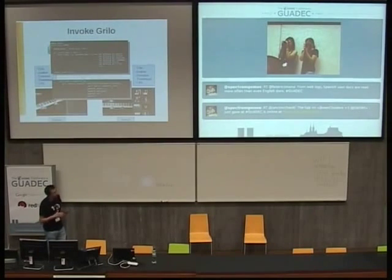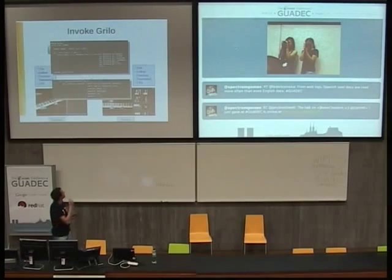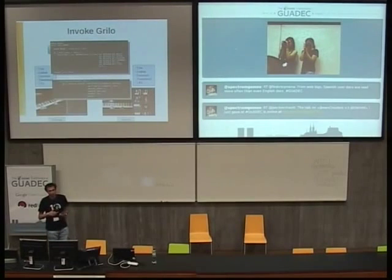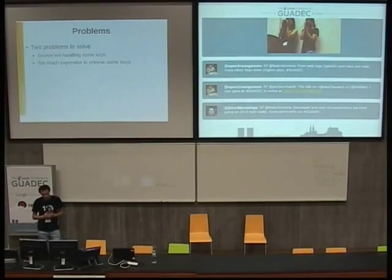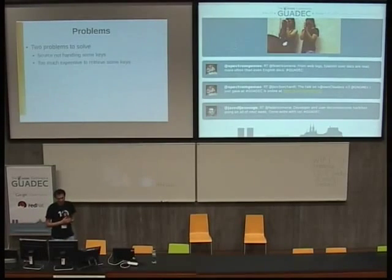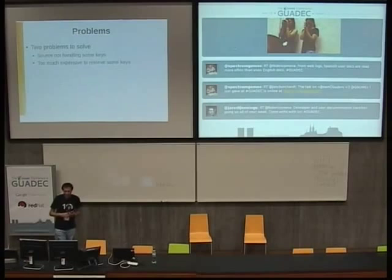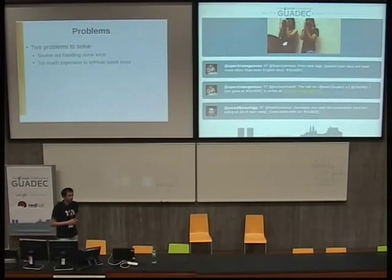As you can see, it's quite simple because you're forgetting about the individual web service API — Grilo makes it simpler, you don't need to handle REST or XML or whatever. Everything is done by the plugin. Now, there are two problems to be solved. The first is that not all the information you want to show is handled by the source. For instance, a web service plugin that provides video but doesn't provide the thumbnail.